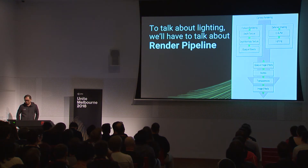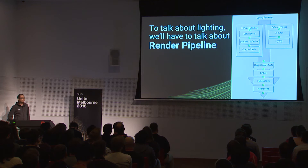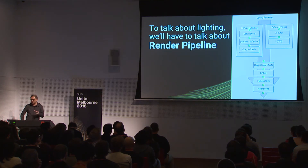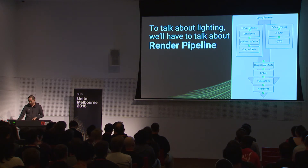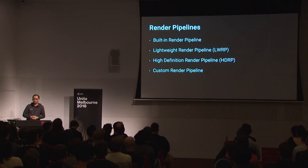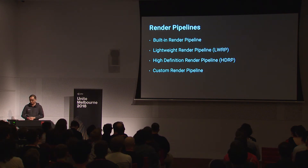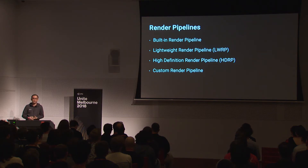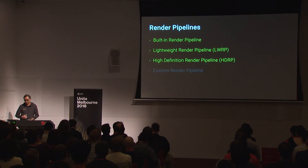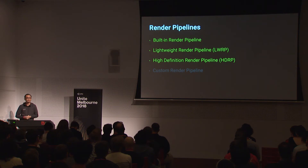To talk about lighting, we need to talk about render pipelines, because different render pipelines handle lighting differently. Unity comes with a built-in render pipeline and several scriptable render pipeline templates — for example, the Lightweight Render Pipeline and the HD Render Pipeline. You may also have created your own custom render pipeline. I'll be focusing on the built-in, the Lightweight, and the HD render pipelines.